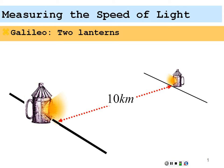Based on all that, Galileo came up with a speed of light of 3 times 10 to the 5 meters per second — not bad, but more than a factor of 1,000 off.